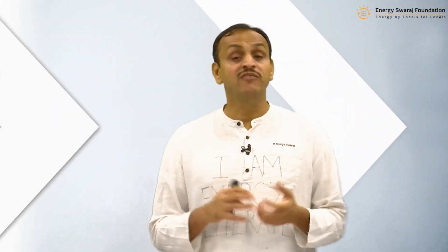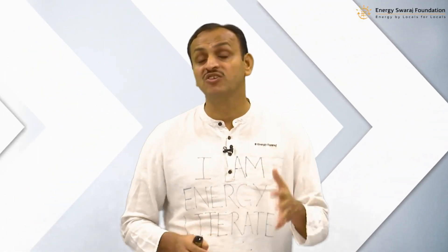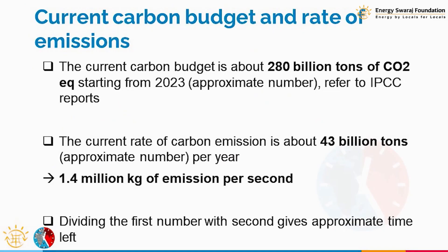A common person doesn't have to become a scientist to figure out the exact time — we just need to understand the current situation and how much time is left. Take 280 billion tons, the carbon budget, divide by the per-year emission of about 43 billion tons, and you get approximately six and a half years. That's it — only six and a half years left before we touch global warming of 1.5 degrees centigrade.